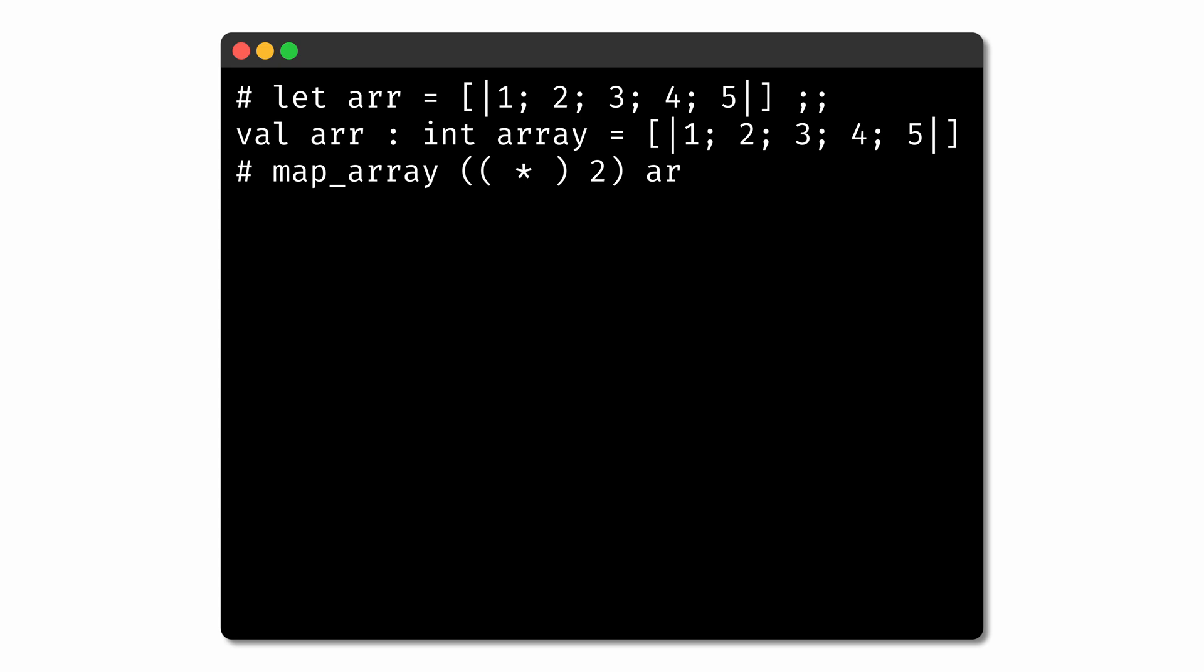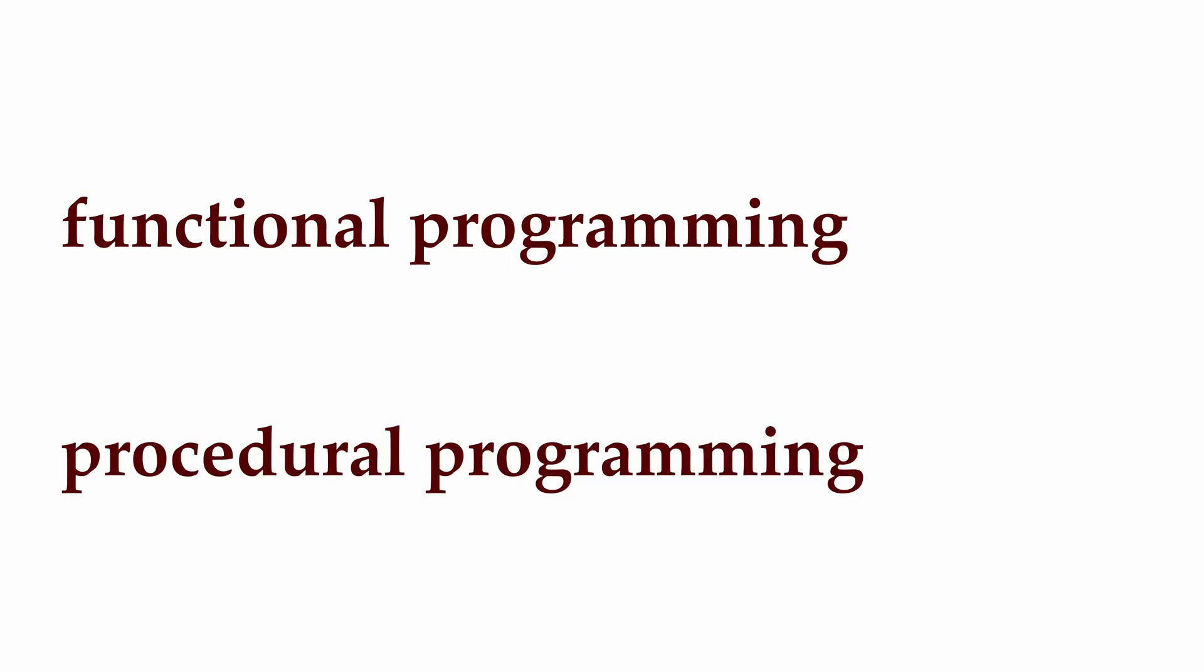But there's a trade-off here too. By mapping the elements this way, we've lost access to the original values in the array. The array now holds only our new values.